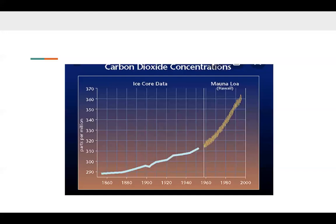This graph shows the carbon dioxide concentration in parts per million over time from around 1860 until about 2000. From 1860 to 1940, there's a slow but steady increase from 290 to about 315 parts per million. After 1960, due to more humans driving cars and factory farming to feed a growing population, CO2 increased rapidly from 320 parts per million all the way up to 365 parts per million by 2000 — a huge increase over a short span of time.